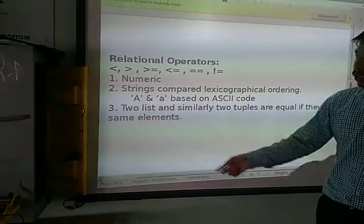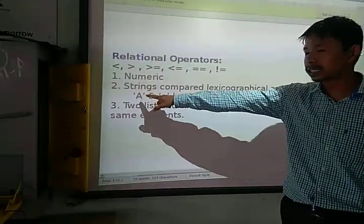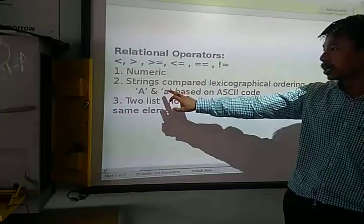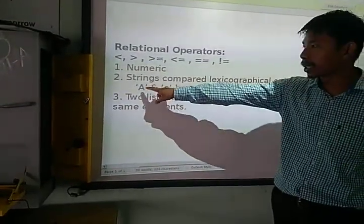So in the ASCII code the value of capital A is 65 and small a is 97. So therefore small a will be greater than capital A.